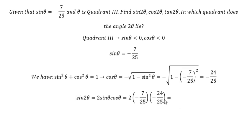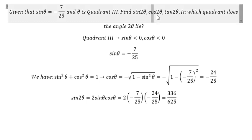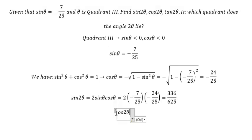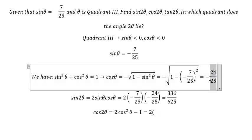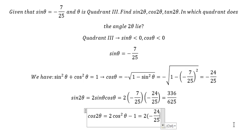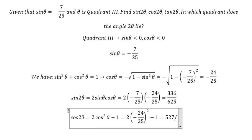And we got sin 2θ equals 336 over 625. Now for cos 2θ, we use the formula 2cos²θ minus 1. So we put 2 multiplied by cos θ squared, and we got cos 2θ equals 527 over 625.